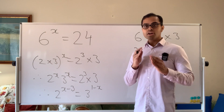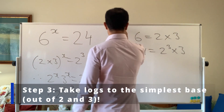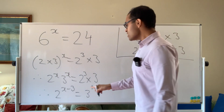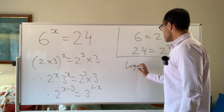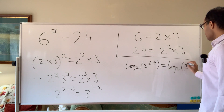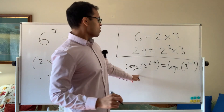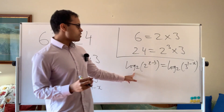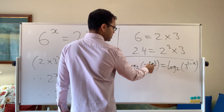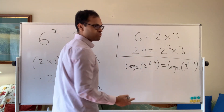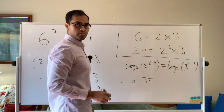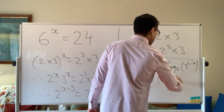Now there's not much else to do but take log. We can take log to the base 2 of both sides — that's the simplest log to take. Log base 2 of 2 to the power (x minus 3) equals log base 2 of 3 to the power (1 minus x). The left-hand side simplifies to x minus 3. On the right-hand side, by log laws, we bring the exponent out front: we get (1 minus x) times log base 2 of 3.